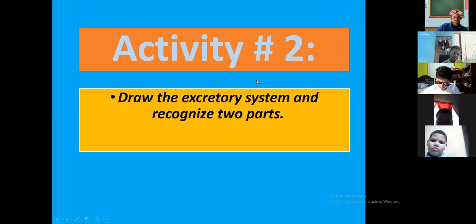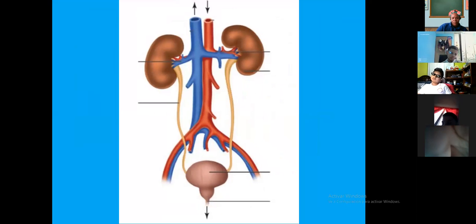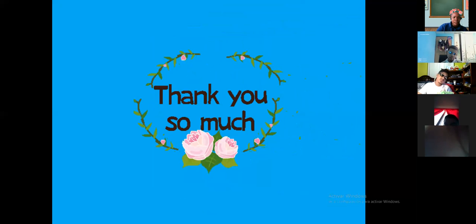Activity number two. Draw the excretory system and recognize two parts. Van a dibujarlo y van a reconocer solamente dos partes. This is my example. You need to stop and you need to stop the video and draw the excretory system. Thank you so much. Recuerden que esta es una actividad sumativa y por lo tanto deben enviarla para ser calificada y subir la nota. See you on next week.